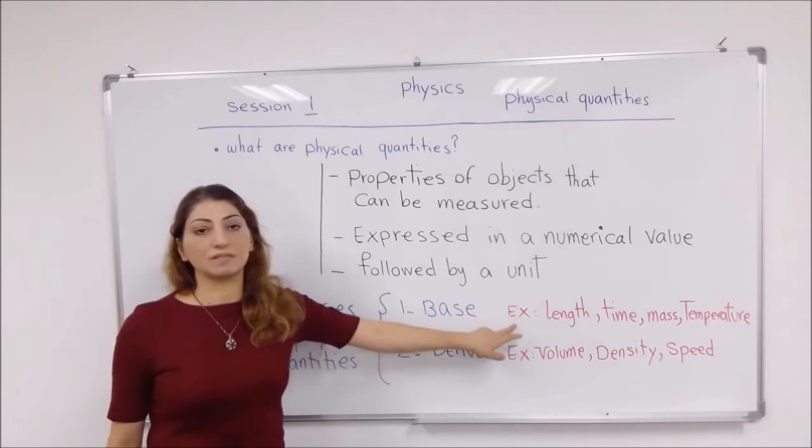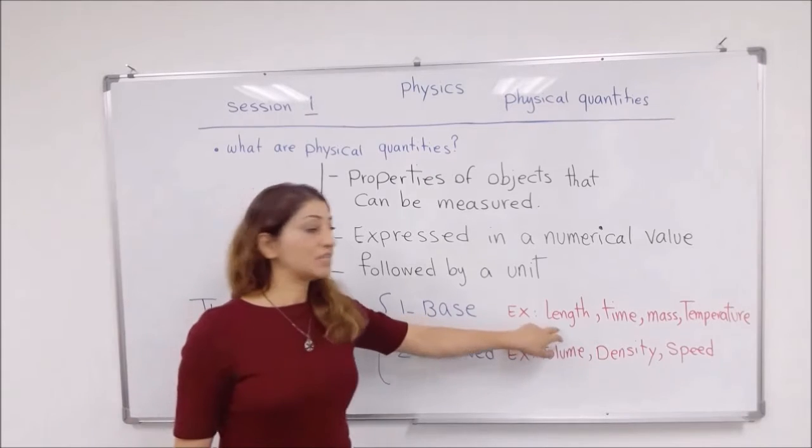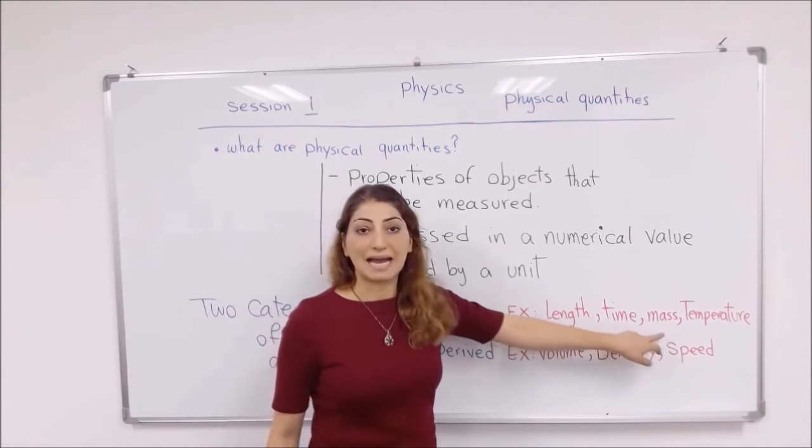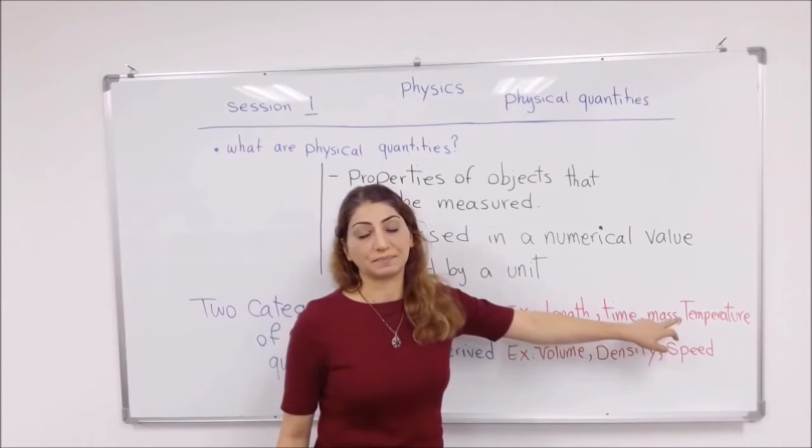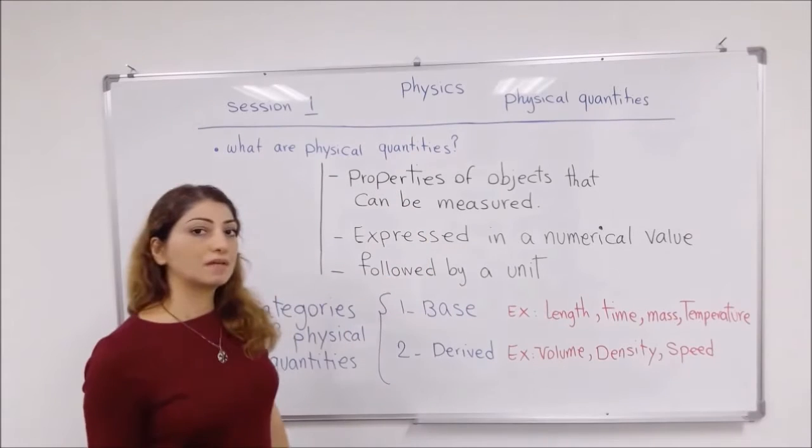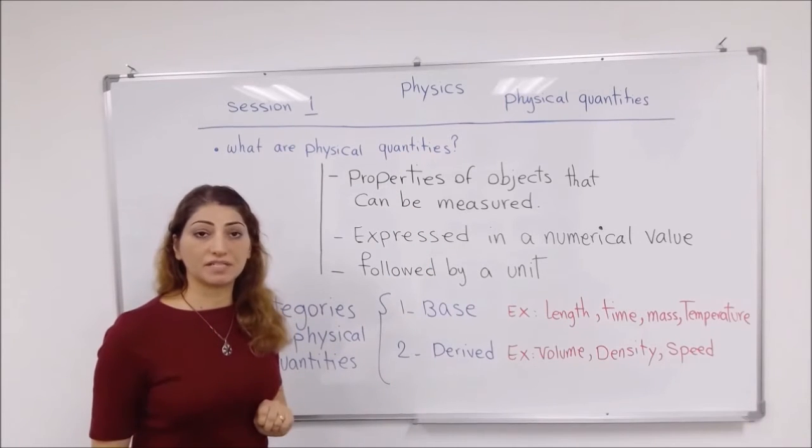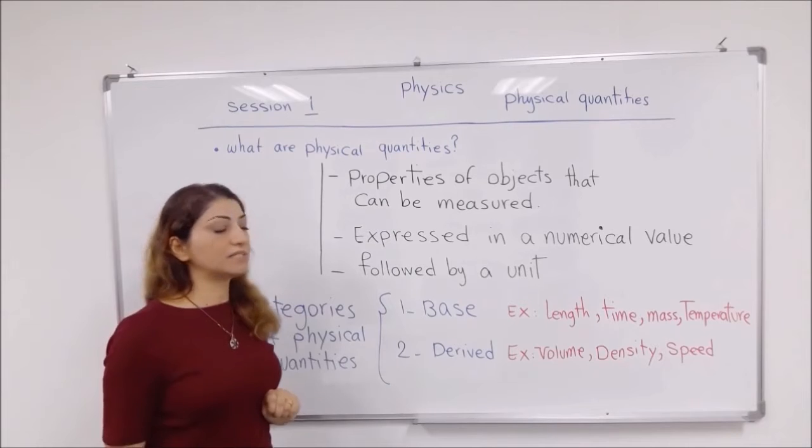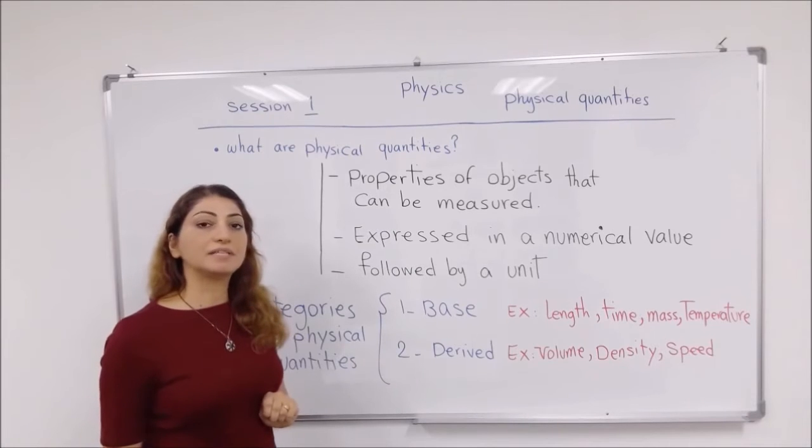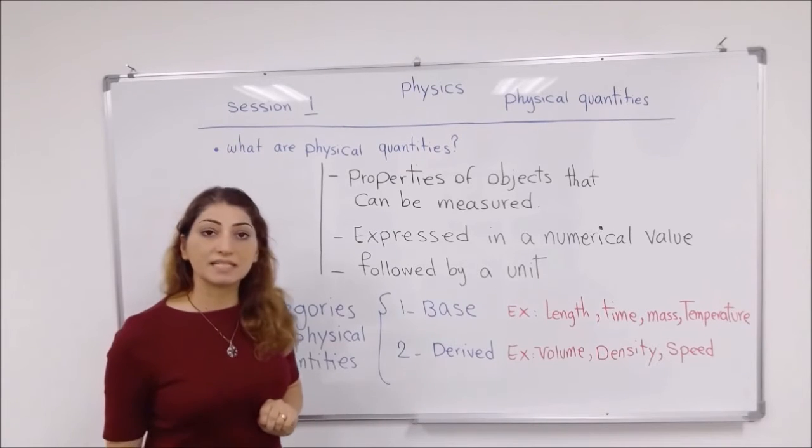The base quantities examples are length, time, mass, and temperature. How about derived quantities? Derived quantities are like volume, density, and speed.